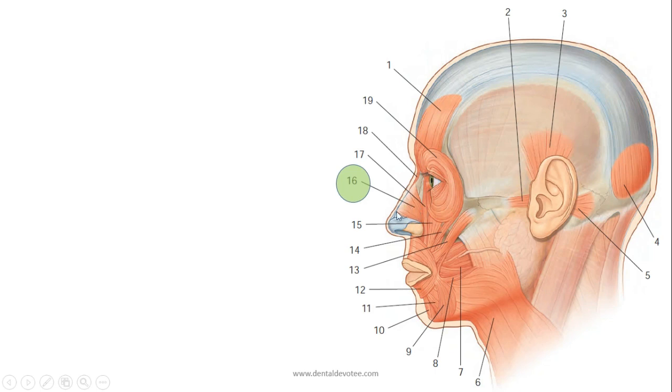The 16th number is in the nose, nasalis muscle. Nasalis consists of two parts: compressor naris and dilator naris. Compressor naris makes the nares smaller and dilator naris make them wider.